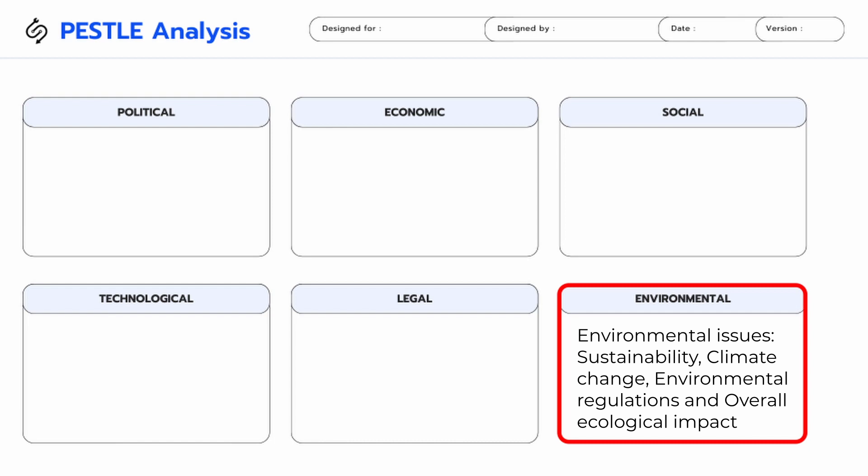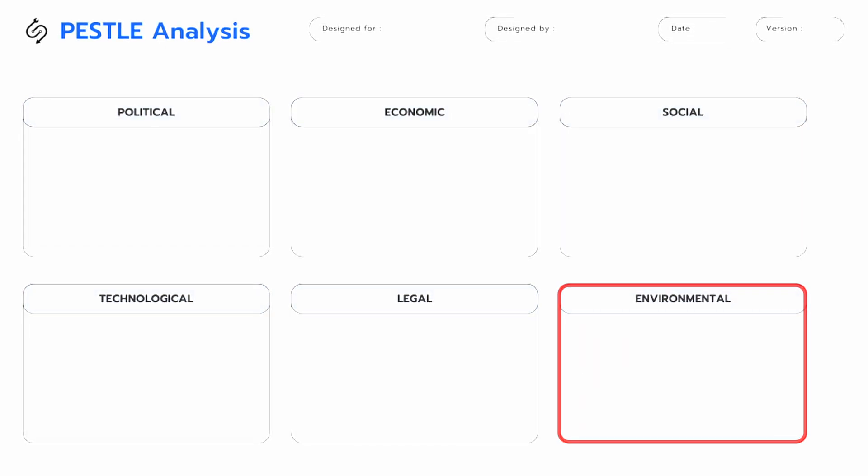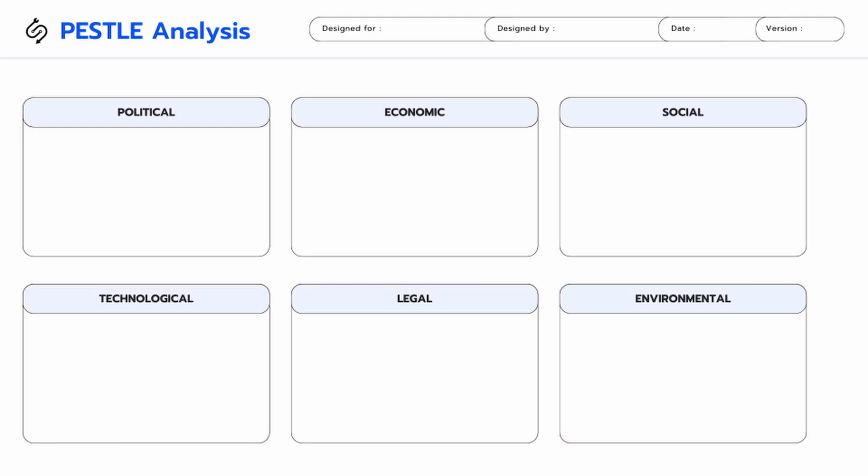Environmental factors refer to the impact of environmental issues on a business, including considerations related to sustainability, climate change, environmental regulations, and the overall ecological impact of business operations. Let's take a look at the PESTLE analysis of Rockstar Games Incorporated.